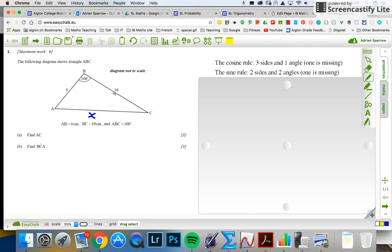I've got one side, two sides, three sides. I include the one that's missing and an angle. So I'm going to go for the cosine rule here.